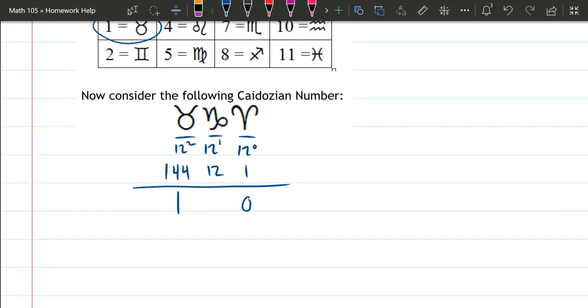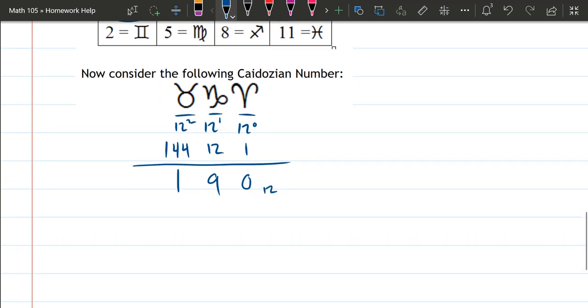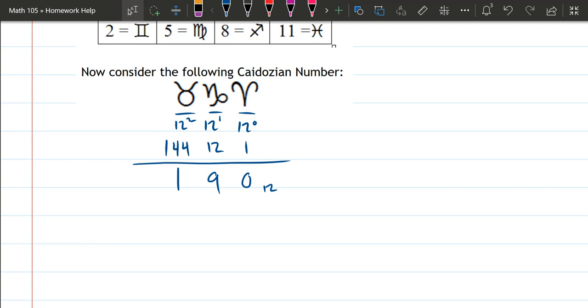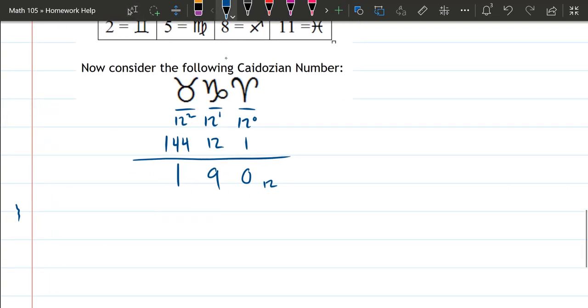So you could say this is 190 in base 12, but they didn't ask us what's the number in base 12, they asked what's the number in base 10. So when we convert to base 10, we have 1 times 144, plus we have 9 12s, 9 times 12, plus 0 ones.